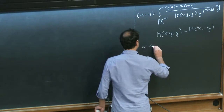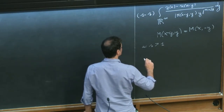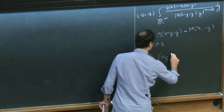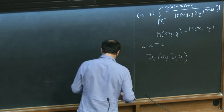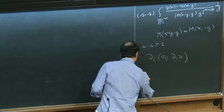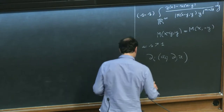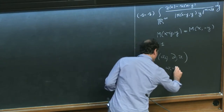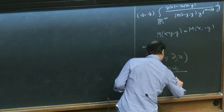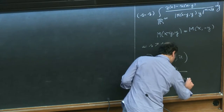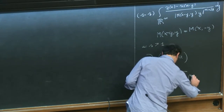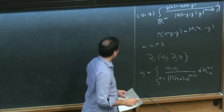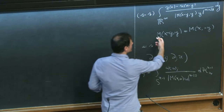This operator, as s goes to 1, recovers the operator in divergence form d_i(a_{ij} d_j). If I'm not mistaken, the a_{ij} are a constant times the integral over S^{n-1} of omega_i omega_j divided by m(x, 0, omega) to the power n plus 2s, integrated over omega. Here m is a matrix function, and we assume everything is smooth enough to make the computation.